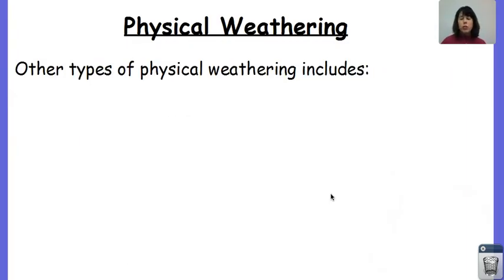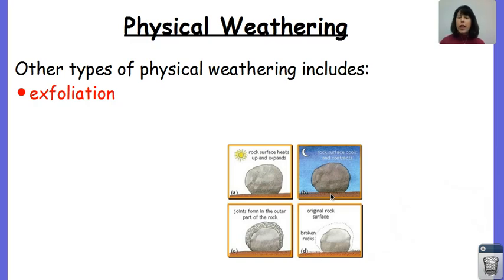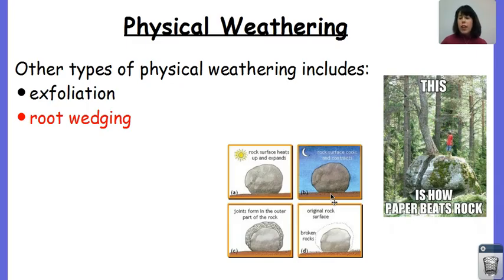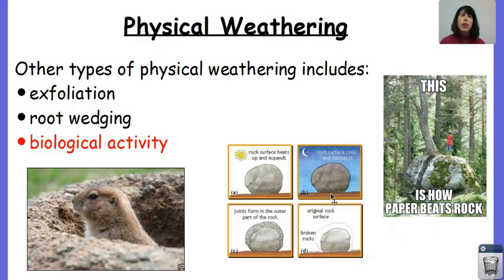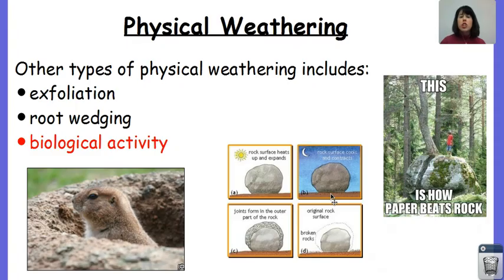Other types of physical weathering include exfoliation, where pressure unloading causes expansion and layers break off, kind of like layers of an onion. Root wedging is when a tree or plant is able to grow through a rock, splitting it in two — you might have seen this with driveways, roads, and sidewalks in your neighborhood. And biological activity, where animals burrow deep into the ground to the bedrock, allowing water to reach it. Remember the five types of physical weathering: frost action, abrasion, exfoliation, root wedging, and biological activity. These do not have any change in composition, just a change in size.